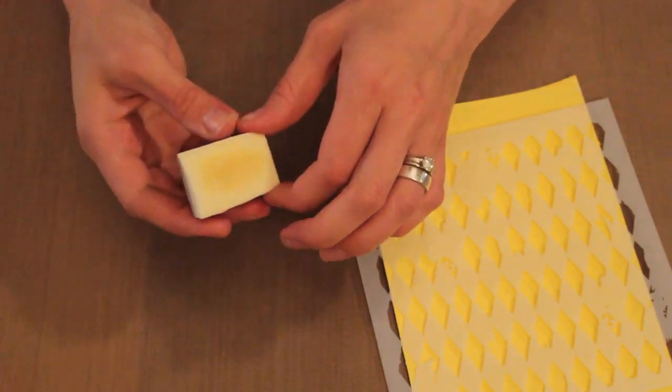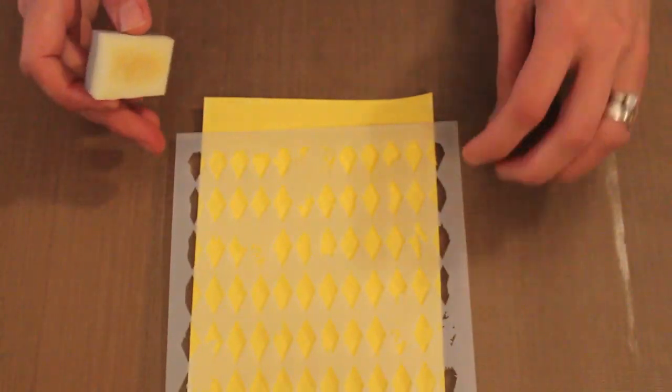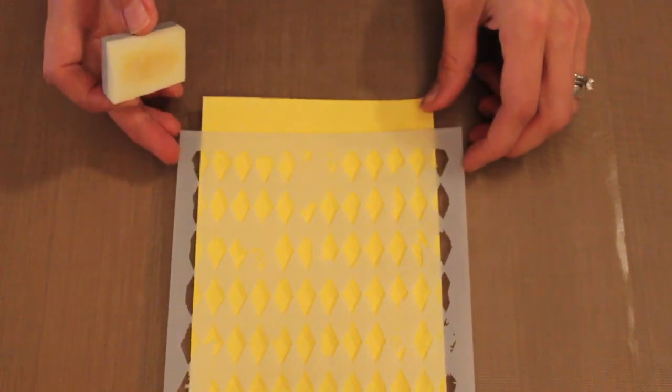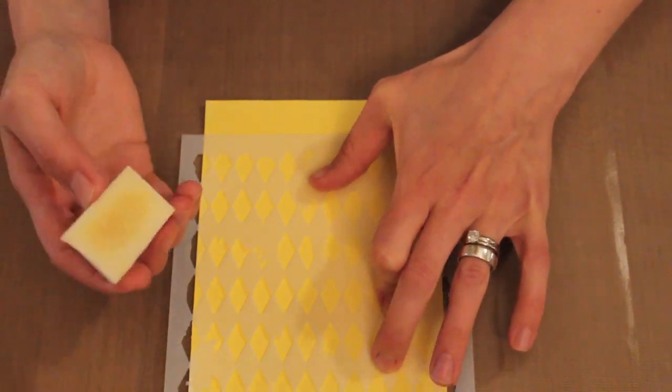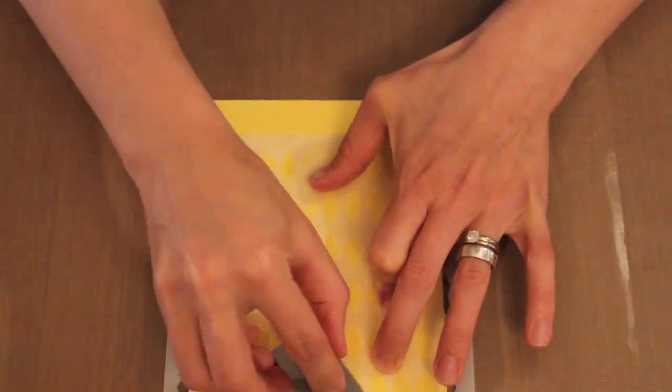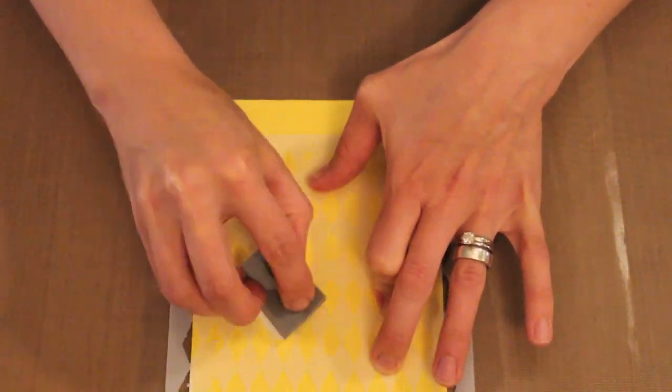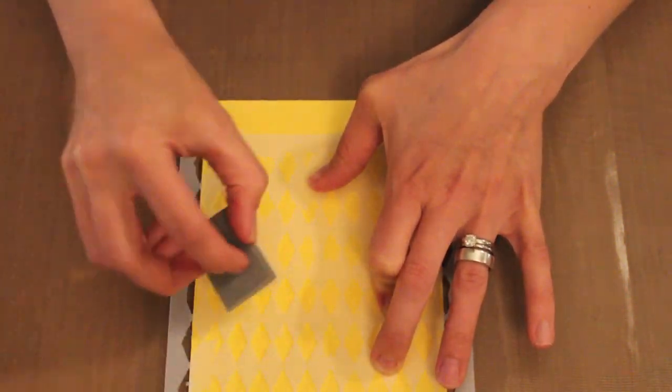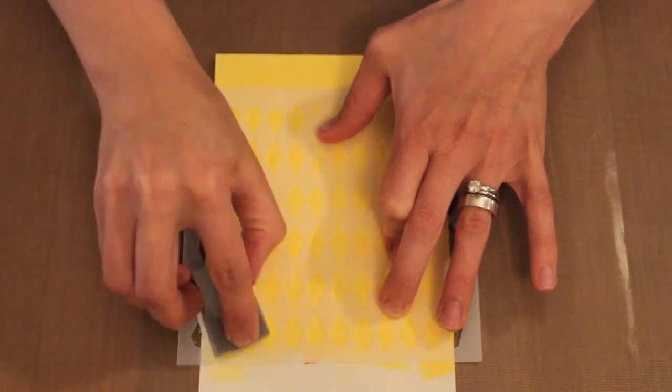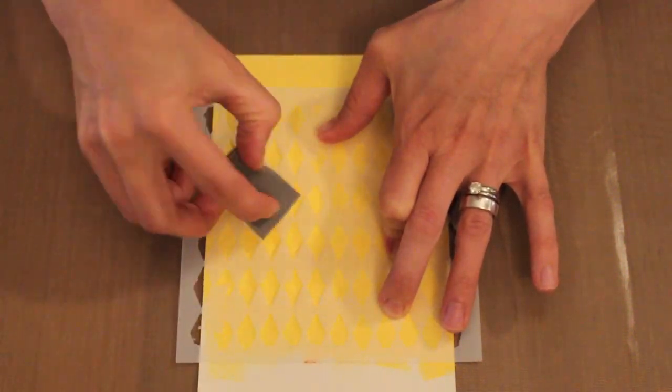I need to hold down my stencil, so I'm going to put my fingers where some of those irregular places are and then simply tap this down. The watermark resist ink is pretty sticky, you can probably hear that as I'm lifting up.